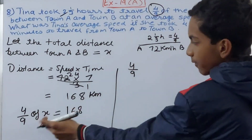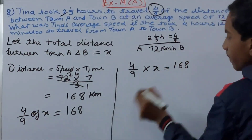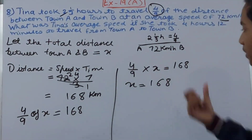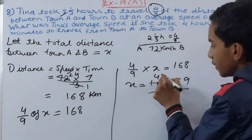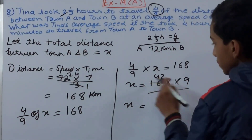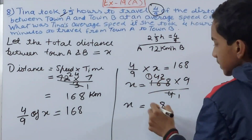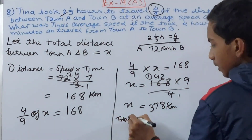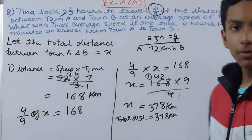Solving 4/9 × x = 168: bring 4/9 to the other side as its reciprocal 9/4. Cancel: 168 ÷ 4 = 42, so x = 42 × 9 = 378 kilometers. The total distance between Town A and Town B is 378 kilometers.